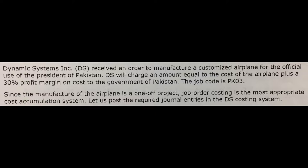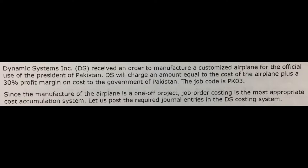Let's try it out for ourselves. For an example problem, Dynamic Systems Inc. received an order to manufacture a customized airplane for the official use of the president of Pakistan. Dynamic Systems will charge an amount equal to the cost of the airplane plus a 30% profit margin on the cost to the government of Pakistan. The job code is PK03. Since the manufacture of the airplane is a one-off unique project, job order costing is the most appropriate cost accumulation system. Let us post the required journal entries in the DS costing system.